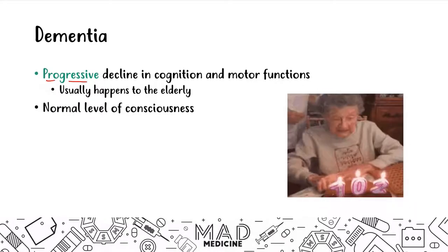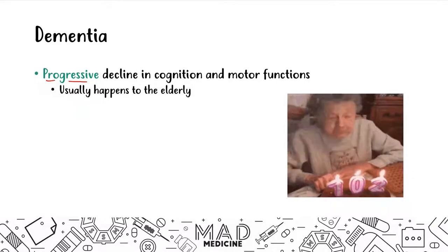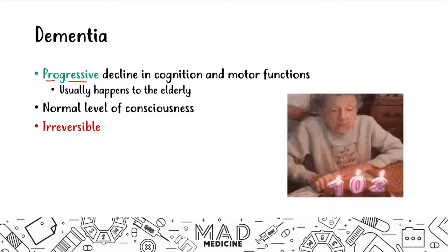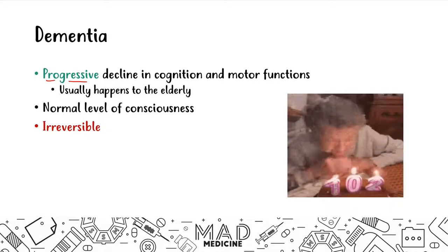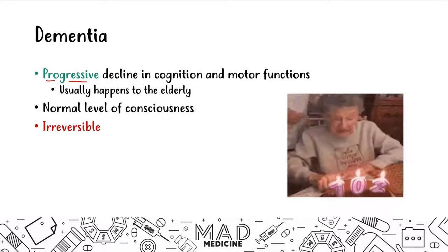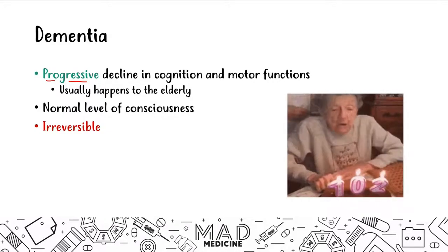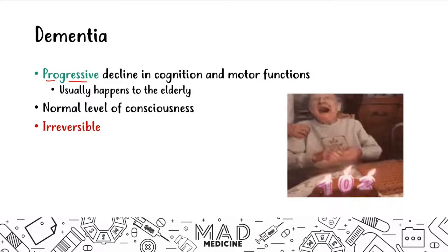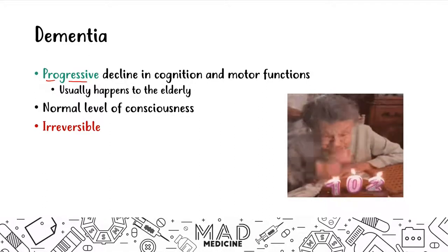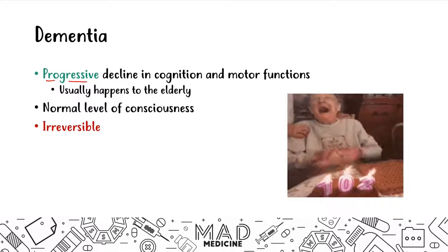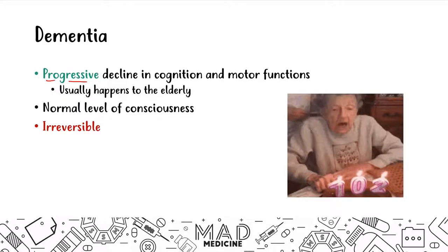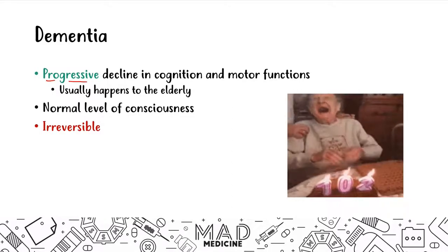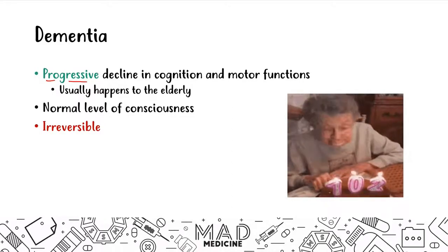Unlike delirium, dementia is an irreversible disease — you cannot undo dementia. Although there is a lot of current research happening on dementia and its processes, as of now dementia is an irreversible disease. That's another key distinction between dementia and delirium.